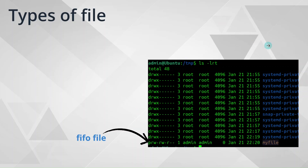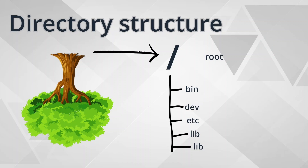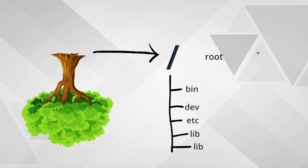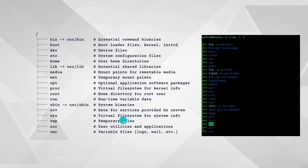The Linux directory structure is like an inverted tree where the root is on top and the rest of the directories are like leaves. We have the following key directories: /bin or binary, which points to /usr/bin and contains essential commands like ls and cp; /lib, which points to /usr/lib and contains essential shared libraries; and /sbin, which points to /usr/sbin and contains system binaries used only by the system administrator or the system itself.